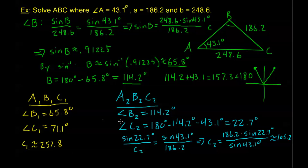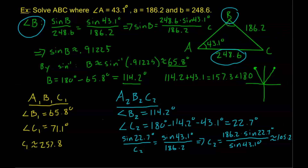We've solved the problem and have two different triangles. Both share angle A = 43.1°, side A = 186.2, and side B = 248.6, but their angle B, angle C, and side C values differ. This is the most difficult case of the ambiguous triangle. The key — and I cannot stress this enough — is to first solve the unknown angle across from a known side. Depending on that result, you'll have one, two, or no solutions. Good luck on your homework, and in the next video we'll start on case 3 and case 4 triangles using the law of cosines.